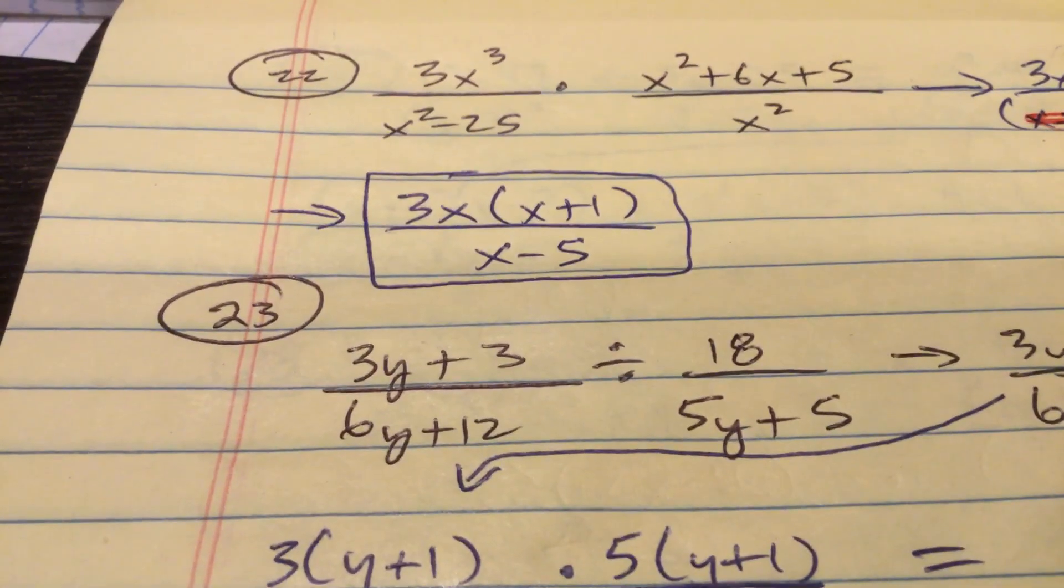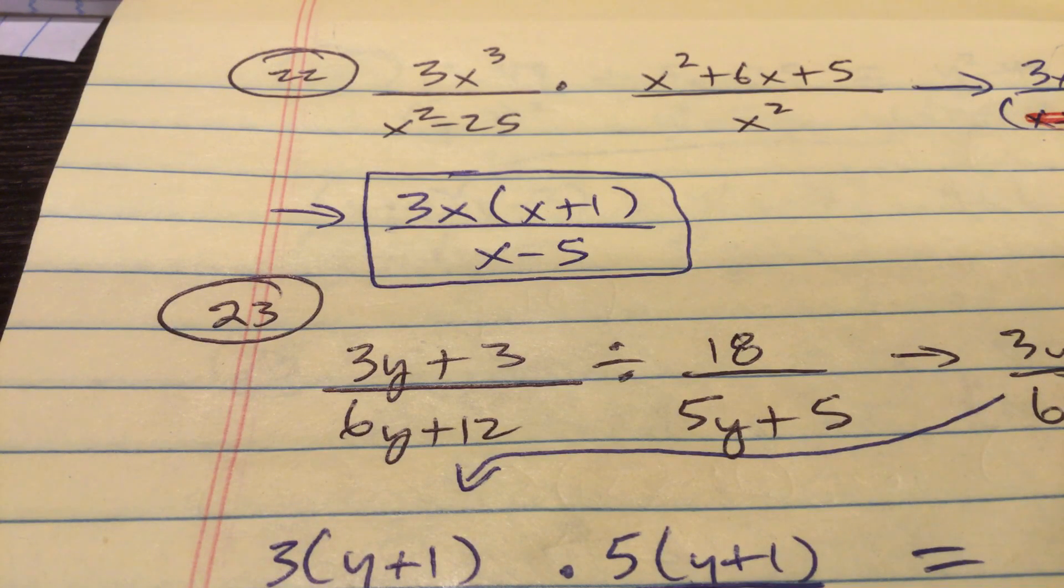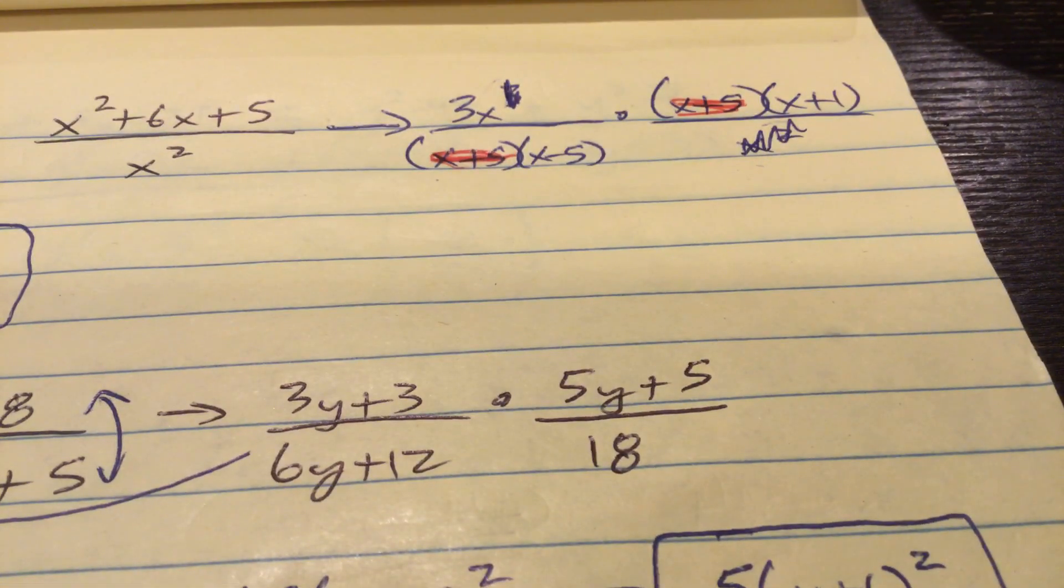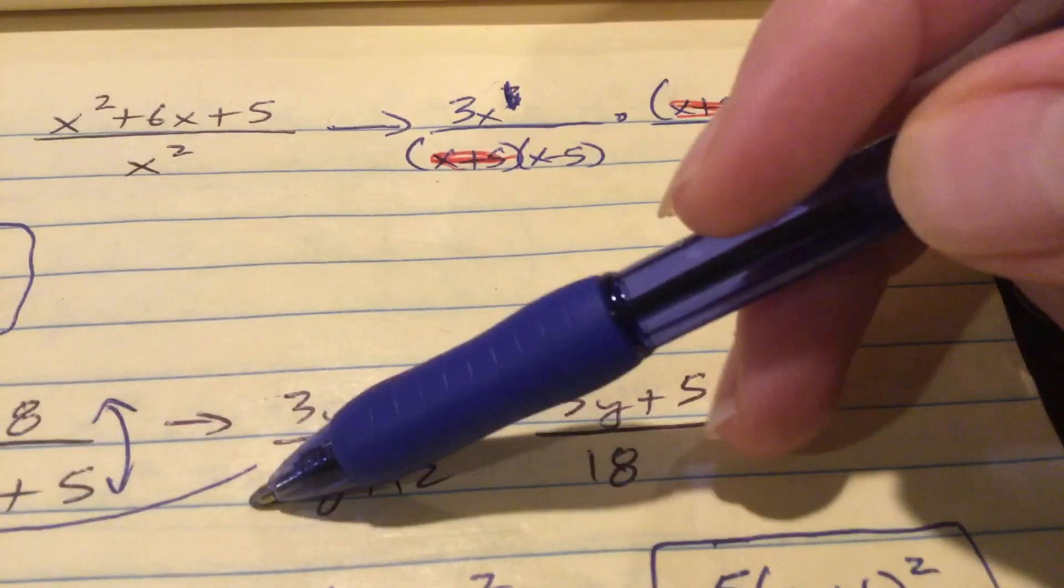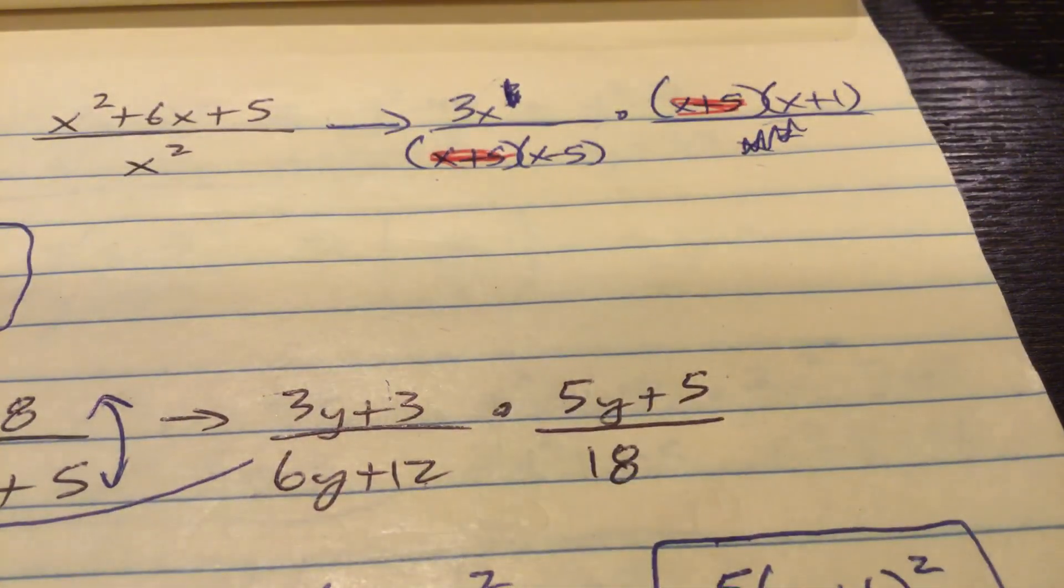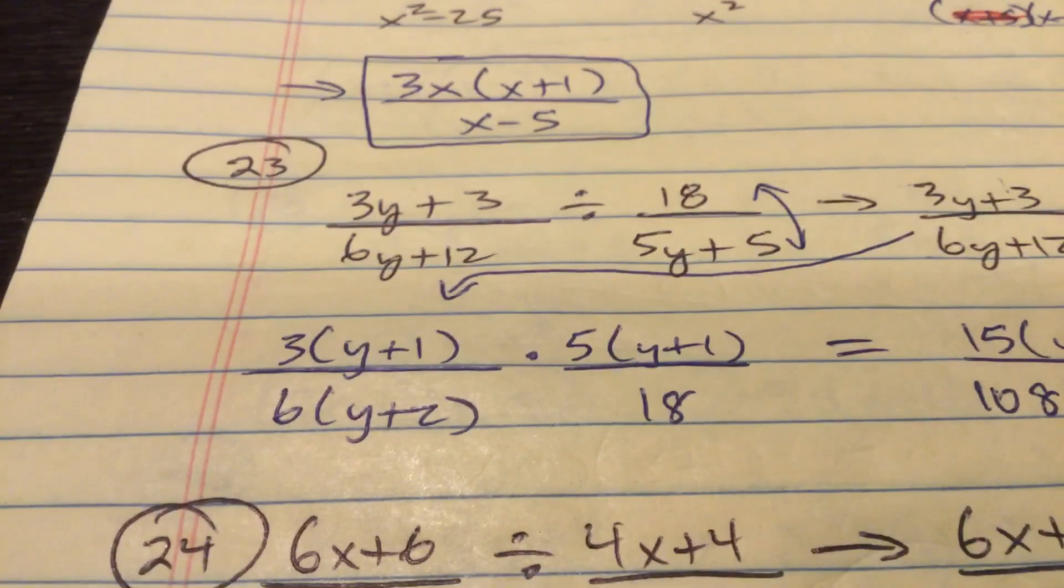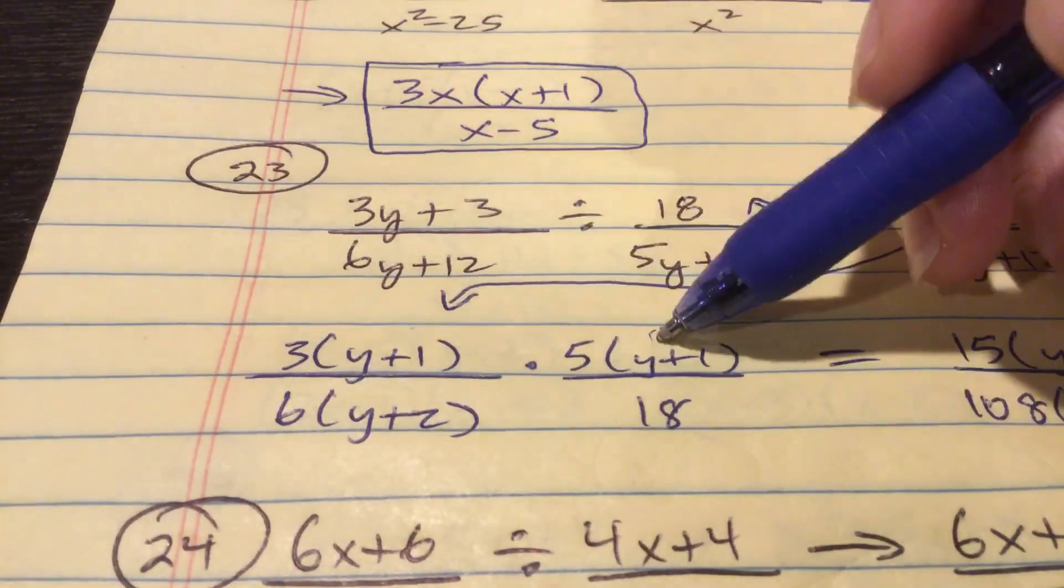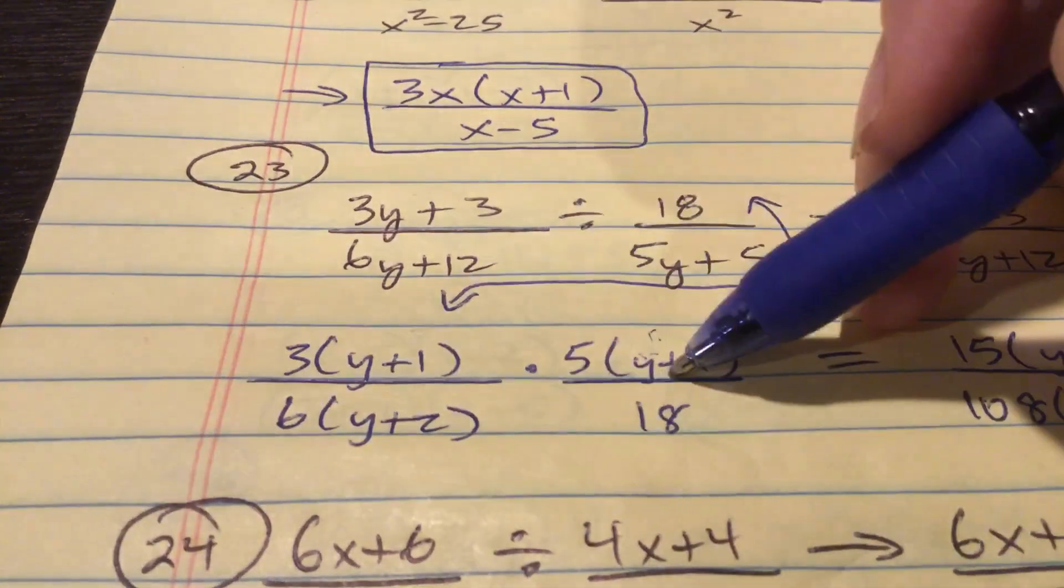Alright. Folks, 23. We know this from junior high. You don't divide with fractions. Instead, you multiply by the reciprocal. So here's the initial question. But I'm going to take 3y plus 3 divided by 6y plus 12. And I'm going to multiply it by the reciprocal of this. So I'm going to say times 5y plus 5 over 18. Again, we multiply by the reciprocal always. And I'm going to factor. I'm going to factor out the 3 they have in common. I'm going to factor out the 6 they have in common. I'm going to factor out the 5 they have in common.